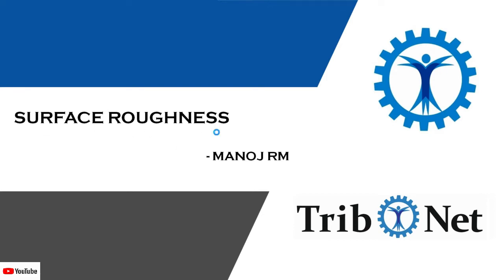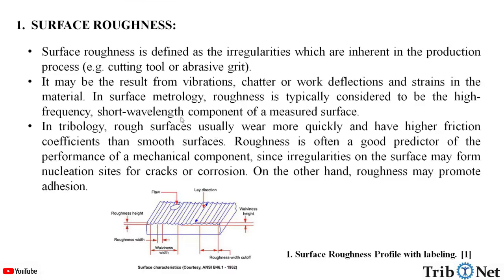What is surface roughness? Surface roughness is defined as the irregularities which are inherent in the production process. It may be the result from vibrations, chatter or work deflections and strains in the material.